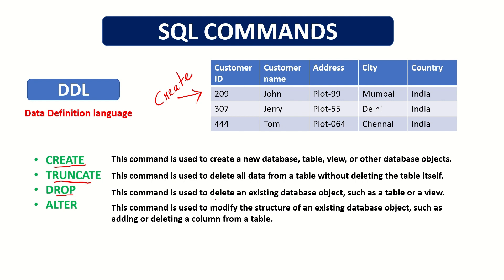We will use the DROP command when we want to delete the whole database object such as a table — both columns and rows are deleted entirely. We use the DROP command when we want to delete the whole table. The ALTER command is used when we see database objects and need some modifications. For example, if we don't need customer ID and we need employee ID instead, we use the ALTER command.